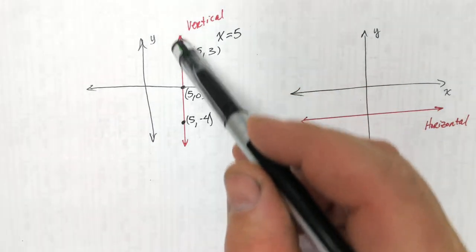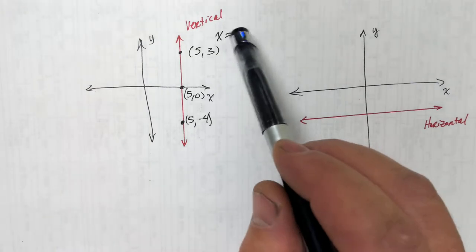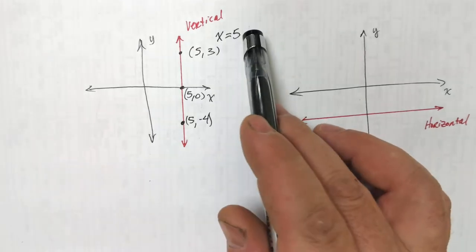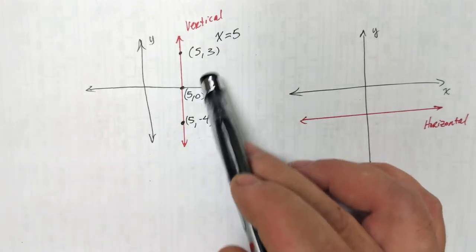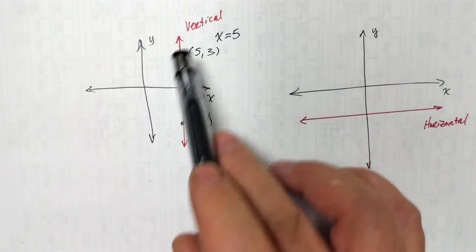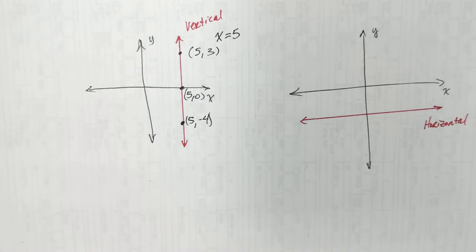Everywhere on the vertical line, x is going to equal 5. That's the equation. This is a picture of all the solutions to that equation. There's no y in it — it doesn't matter what y is. All that matters is that x equals 5.